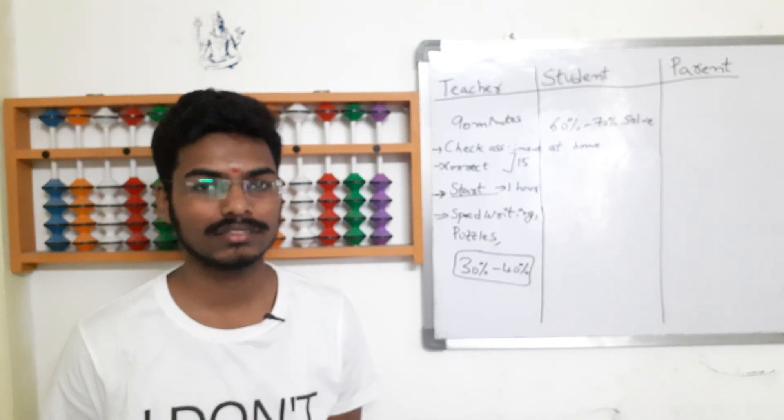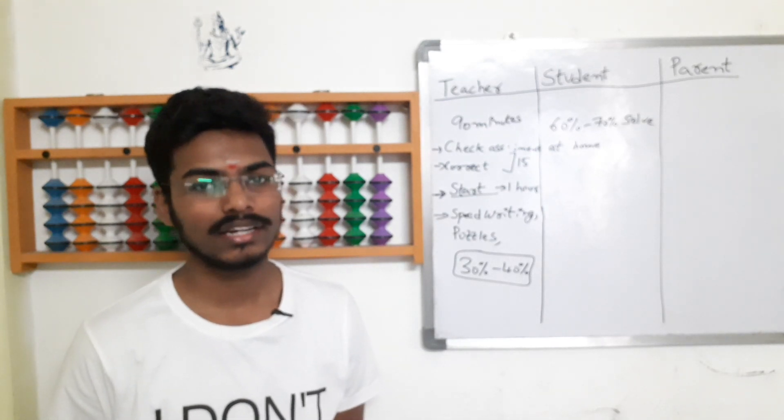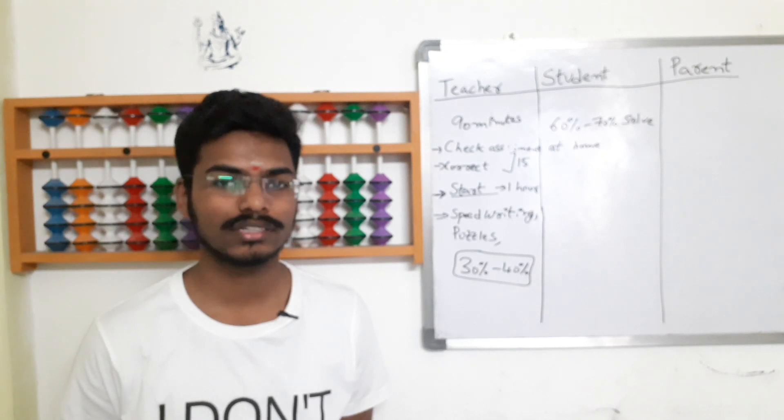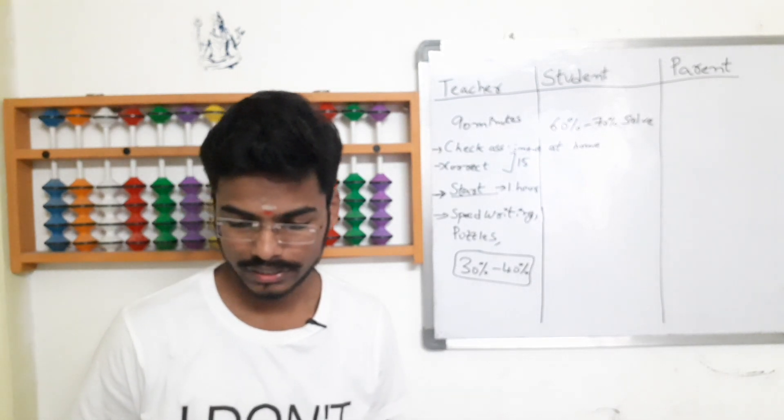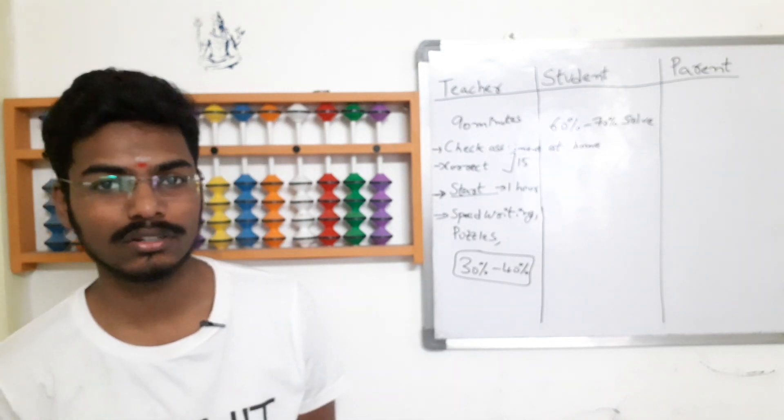So instead of practicing dictations from the website, parents can dictate the questions and students can do and correct the answers. For example, dictations you have 1, 8, 3 rows. So how to do this?